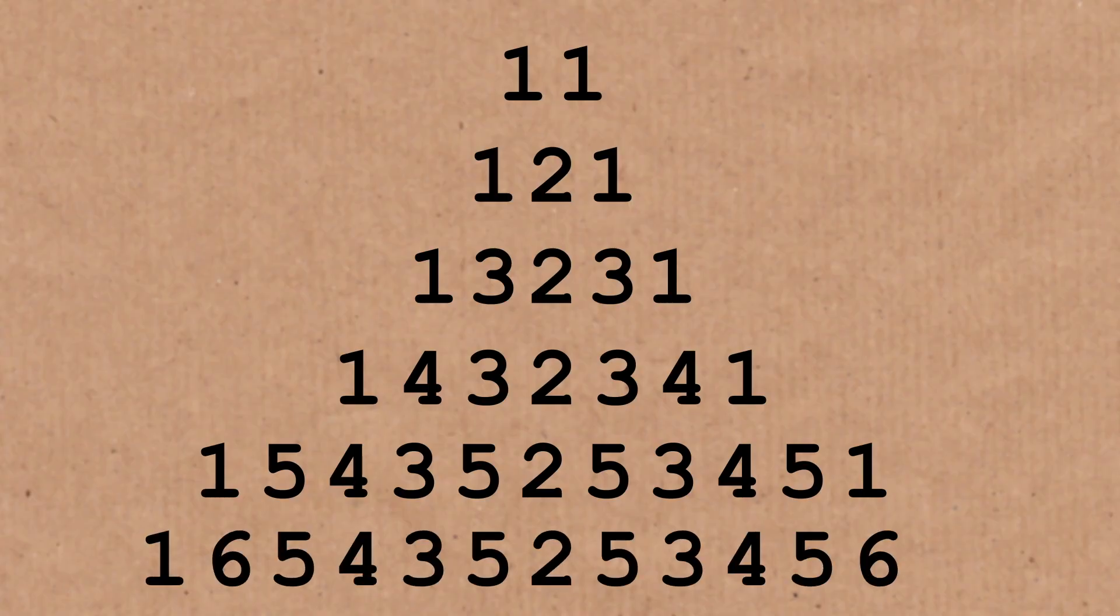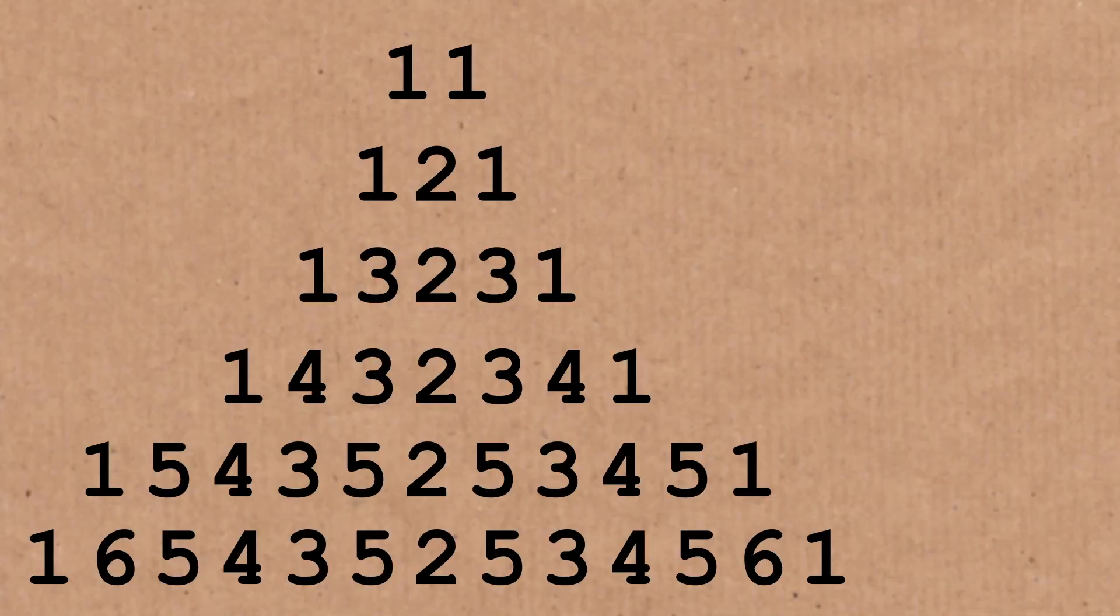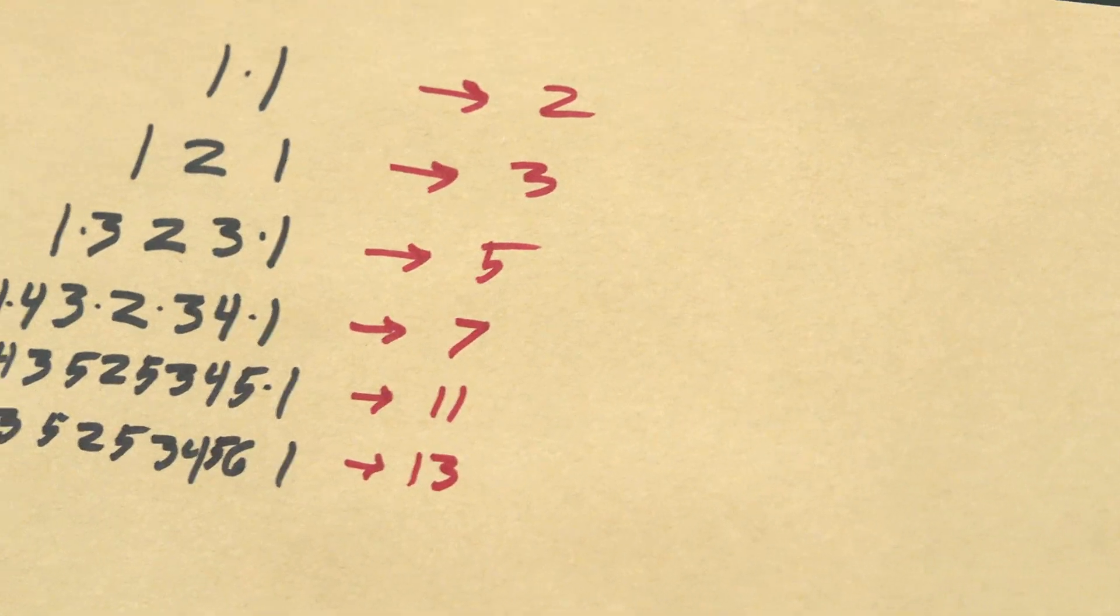Now someone comes along and they're just asking questions about this. What are the patterns I can observe in this Pascal-esque pyramid? And if they just count how many elements are there in each row, they'd say this one has 2 numbers in its row. This one has 3 numbers. This one here has 5 numbers. 7, 11, 13.